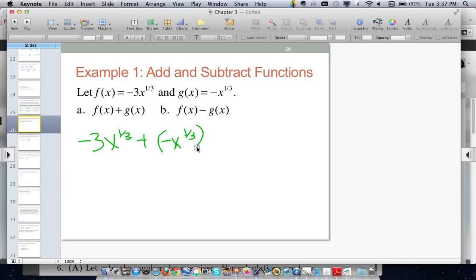I need to make sure that the variables, the letters are the same, and that the corresponding exponents are the same. These are both x to the 1/3, so I can go ahead and add the coefficients. So I have a negative 3 here, and I have a negative 1 here.